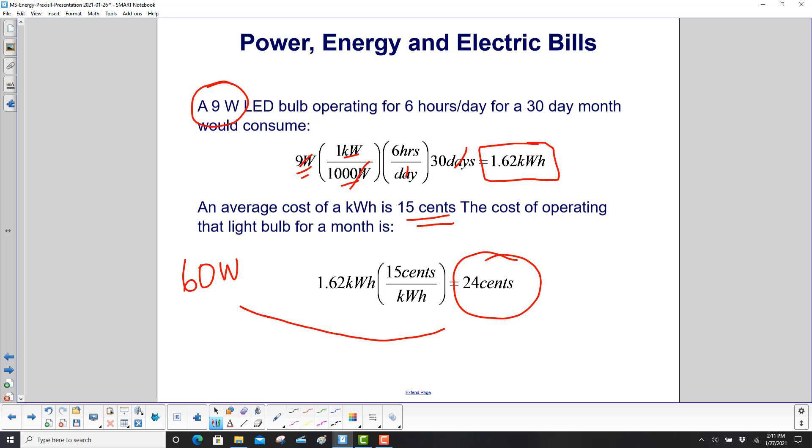An average cost of a kilowatt hour is 15 cents. So the cost of operating that light bulb for a month is 24 cents. Now, if we had the old bulbs, what is that? That's almost 7 times, 7 times 9, almost 7 times as much. So that would be 7 times 24 cents, so that's like a buck 75. So the new bulbs are a lot cheaper. They cost a little more in the beginning, but they pay for themselves over time, and they last almost indefinitely. These things burn out all the time.